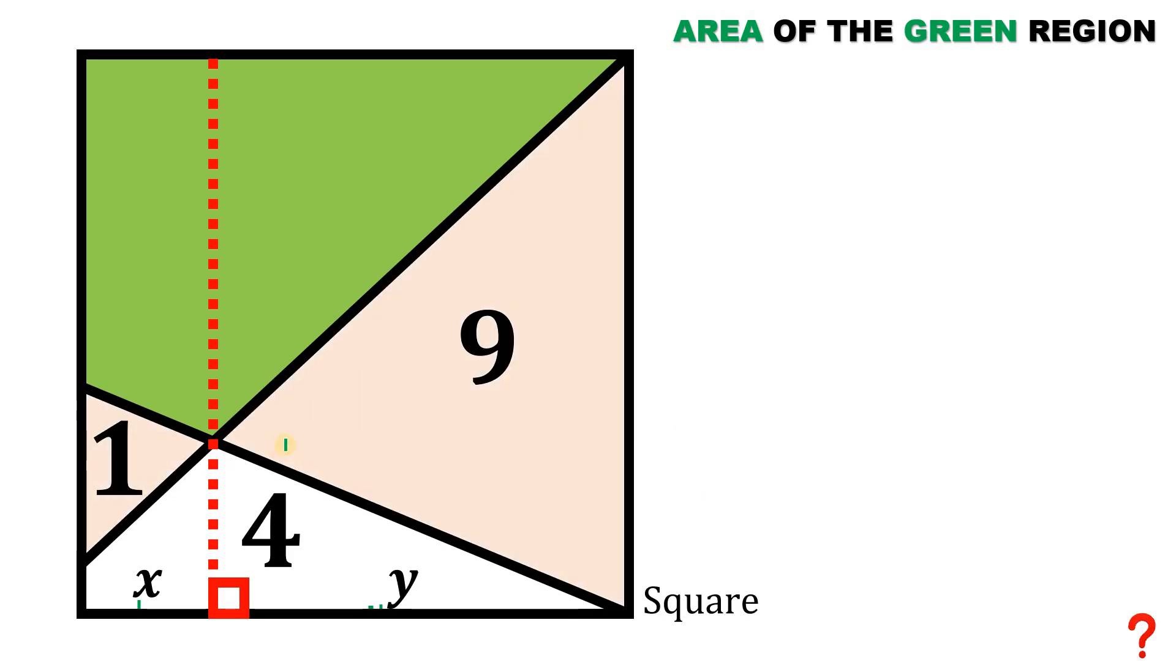Now consider these two similar triangles. They are similar using AAA similarity. These two angles are equal—vertical angles are congruent. And these two angles are equal because they are both alternate interior. These two angles are also equal with the same reasoning, alternate interior angles.